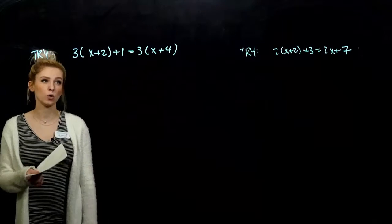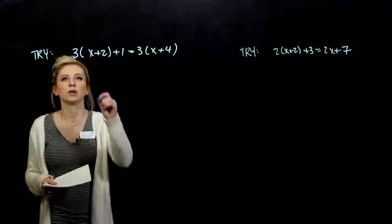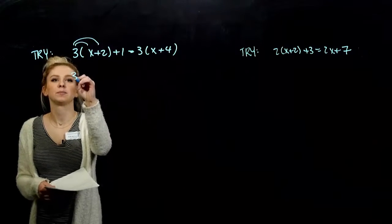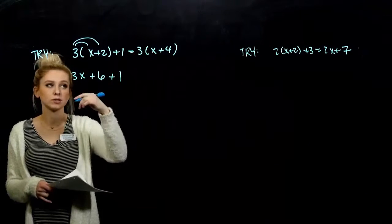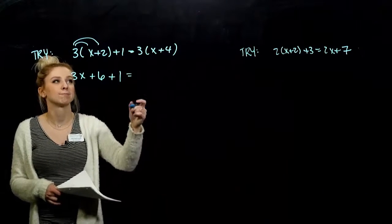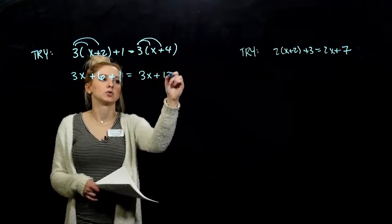In that first example, we have two groupings of parentheses that we need to take care of. So, we need to distribute to get rid of them. I've got 3x plus 6. Don't forget to add one. He's still tagging along. He just wasn't on the inside of the parentheses. And, on the right, if I distribute, 3x plus 12.